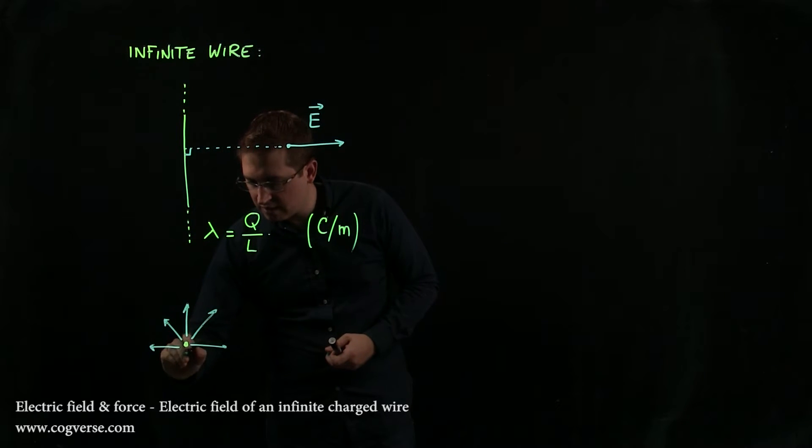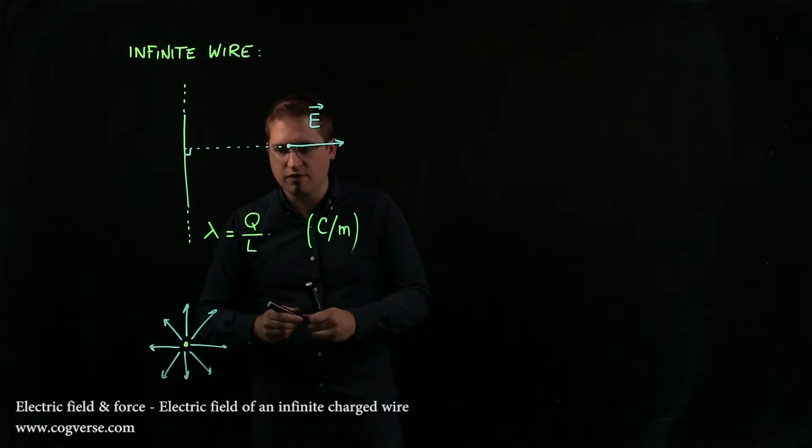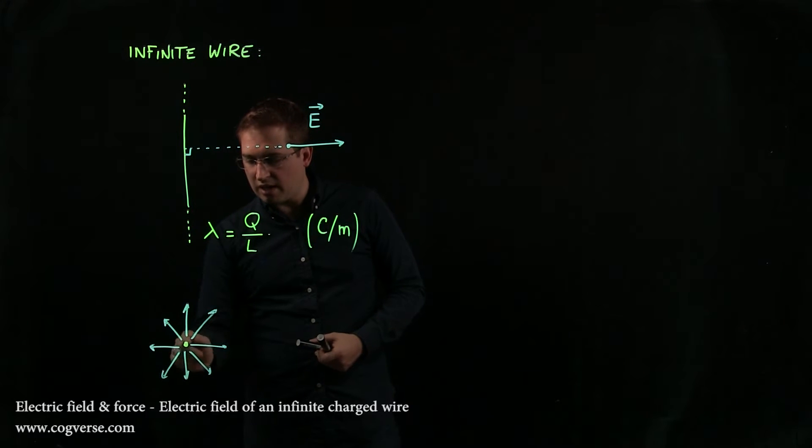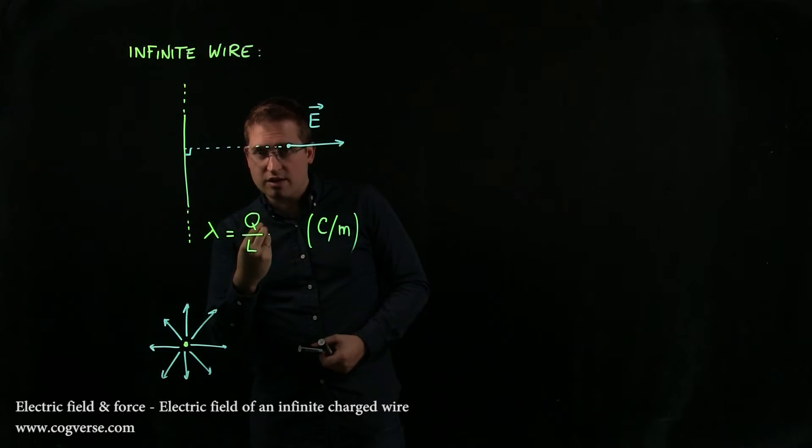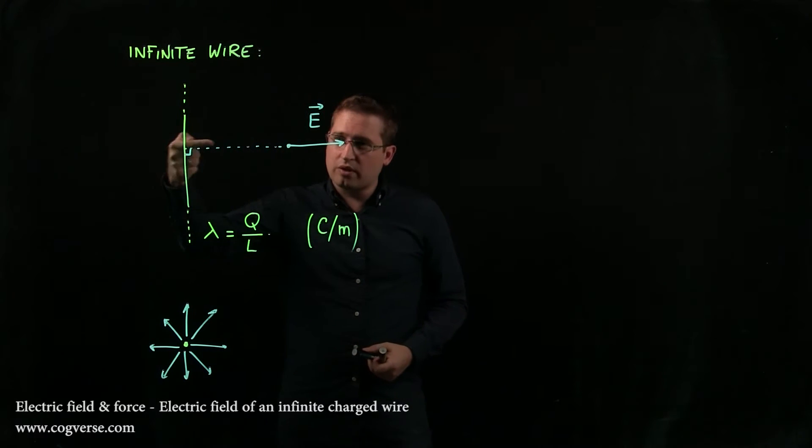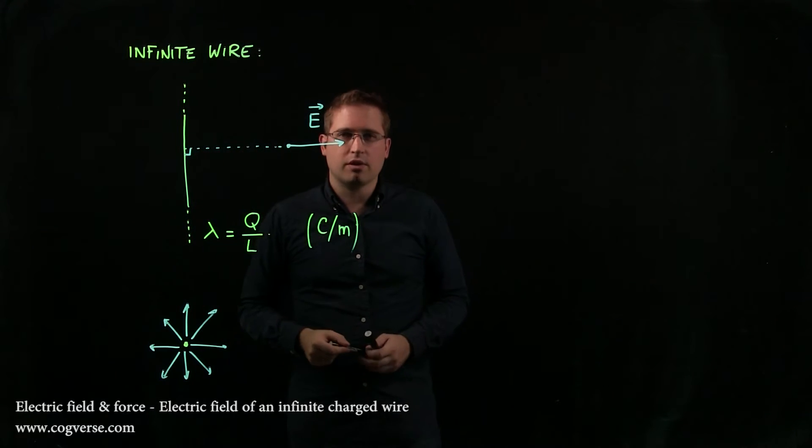All right, now the difference with a point charge, because this really looks like a point charge, careful, this is within a given plane. If you're looking down the wire, there is no electric field coming at you. All right, it points straight out, away from the wire, perpendicularly.